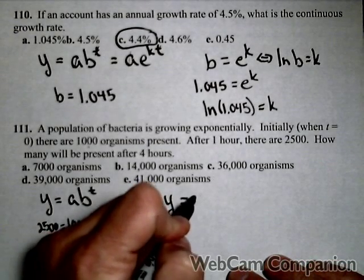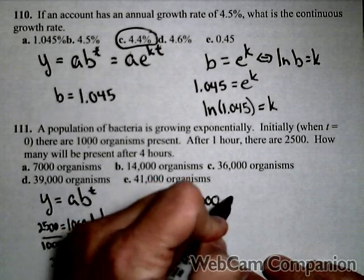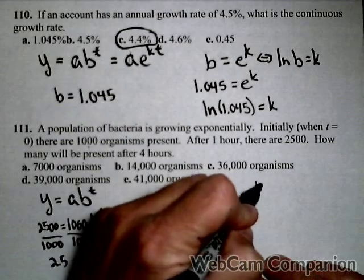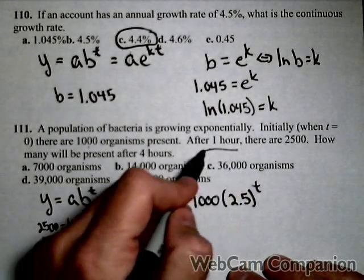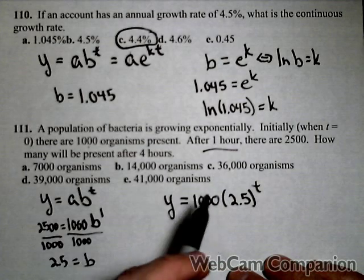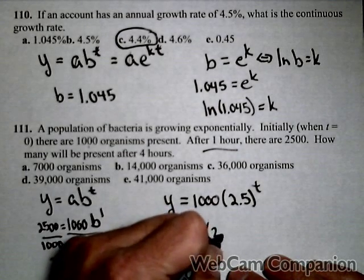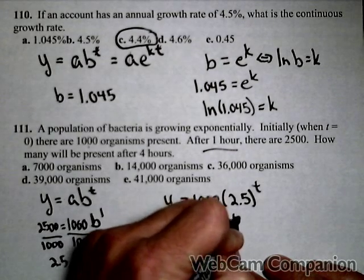So now that I've built my exponential model, 1,000 times 2.5 to the t, with t in hours, because I used hours to build it, I can find out how many after four hours by putting in four for t.